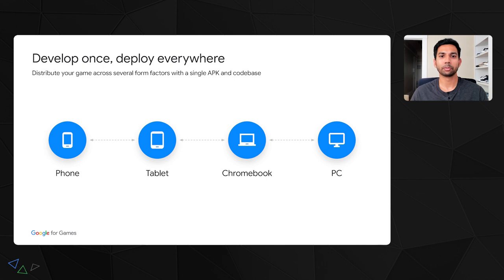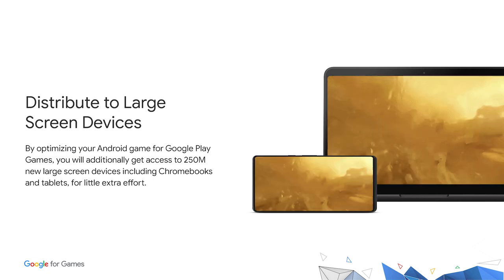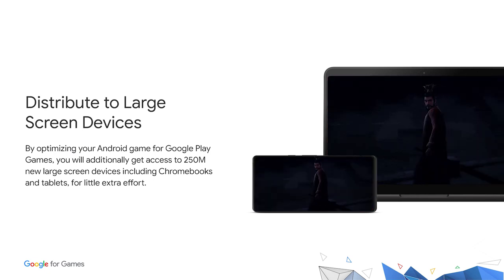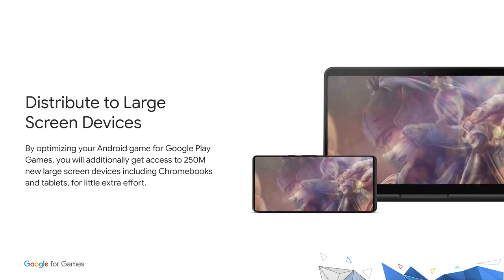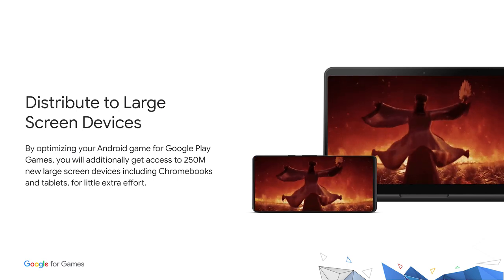We consistently hear from game developers that distributing to a new platform can require a lot of resources, including upfront deployment work and ongoing effort to run QA and maintain a new codebase. We've taken extra care to make sure you can distribute your game to all of these form factors while maintaining a single Android binary and codebase. Instead of developing a new format, you can optimize your game for the new form factor and immediately distribute to phones, tablets, PCs, or Chromebooks — a market of 250 million devices where we see a continually growing number of gamers.